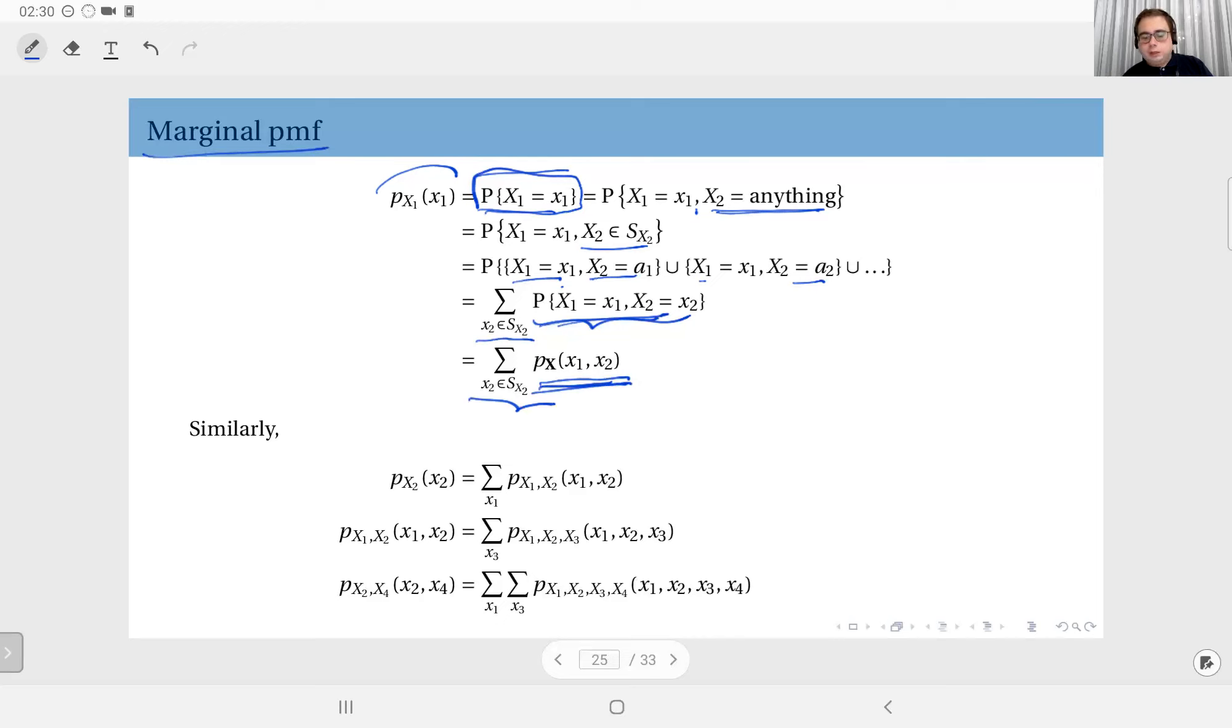The same goes the other way. If you sum this for all possible values of x1, you get the marginal distribution of x2.